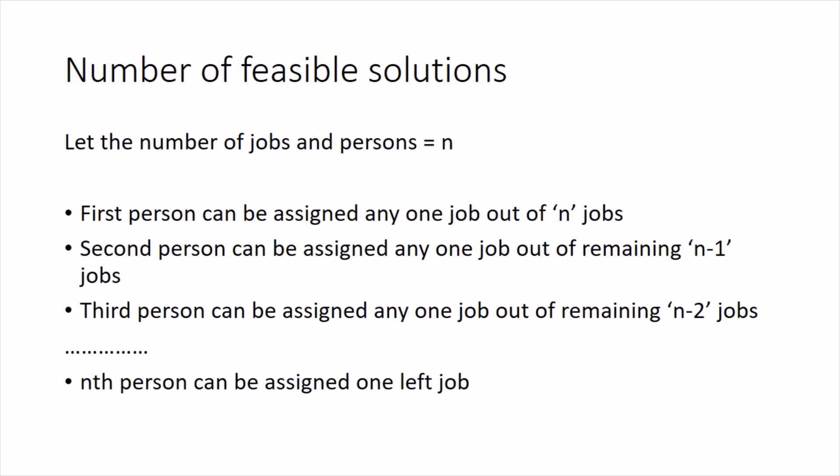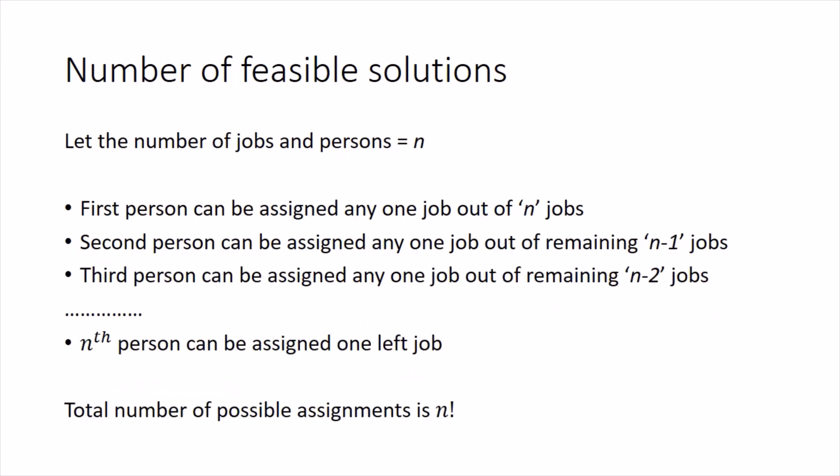If you take a pause and compute how many ways these kinds of arrangements can be done, what is the total number of feasible solutions with this arrangement, you will figure out that the total number of possible assignments is N factorial.